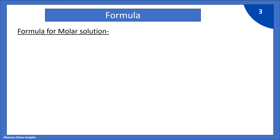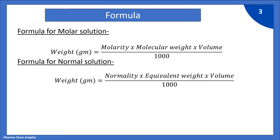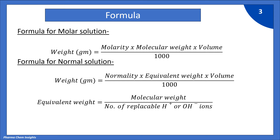For a molar solution, to calculate weight in grams, the formula is: weight = molarity × molecular weight × volume / 1000. Similarly, for a normal solution, weight = normality × equivalent weight × volume / 1000. Equivalent weight is molecular weight divided by the number of replaceable H⁺ or OH⁻ ions.